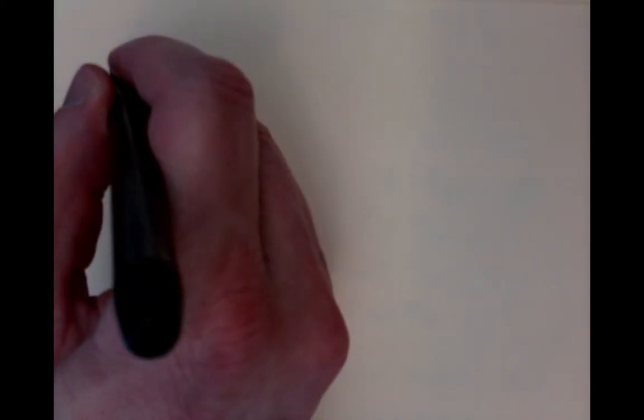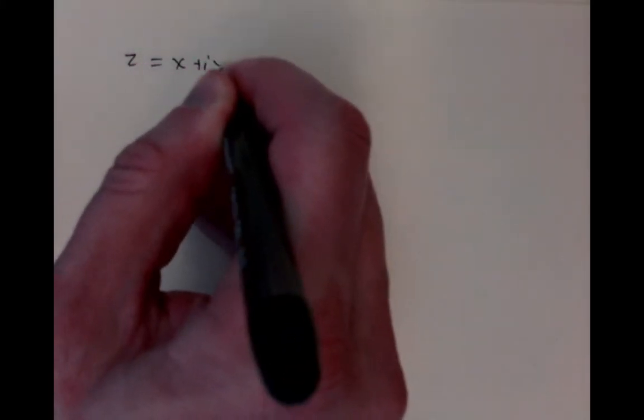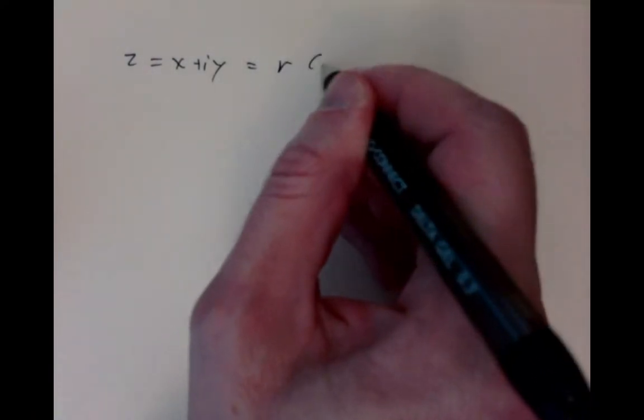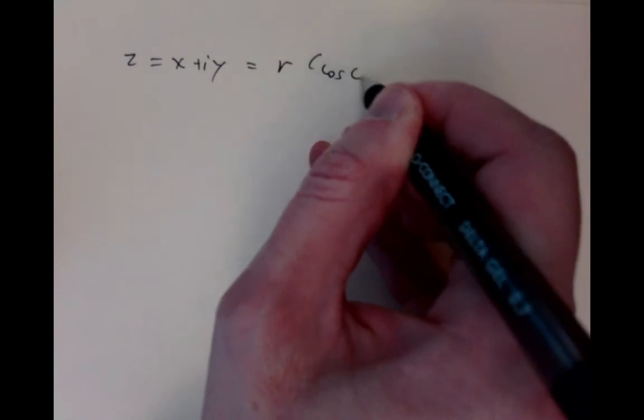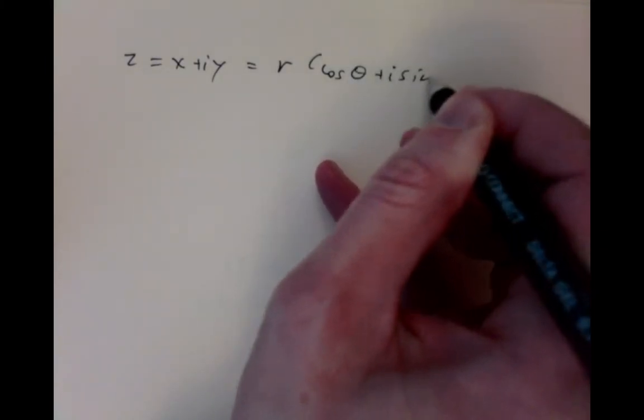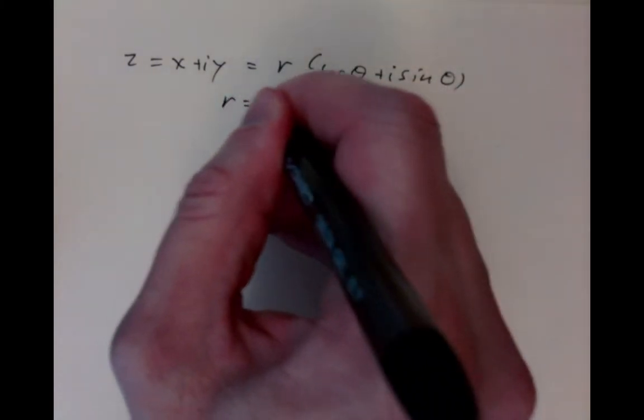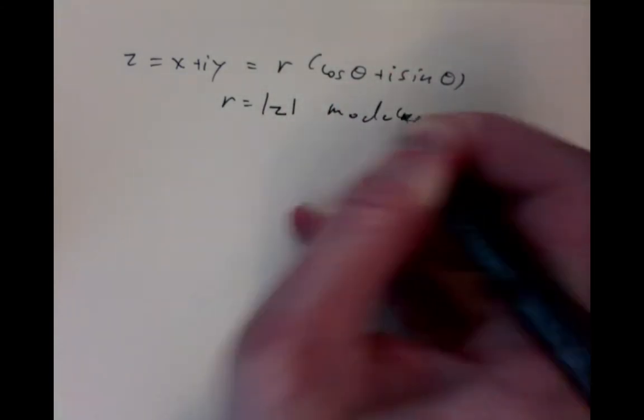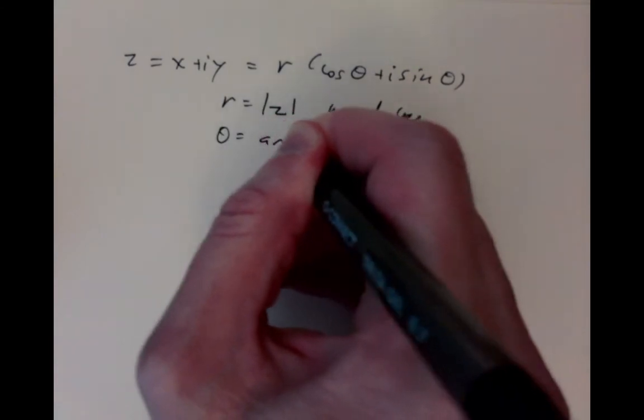We said previously that we could write our complex numbers, x plus iy, in a polar form as r times cos theta plus i sine theta, where r is the modulus and theta is the argument.